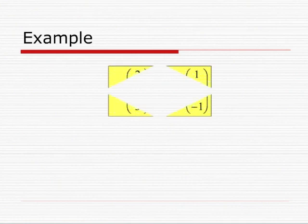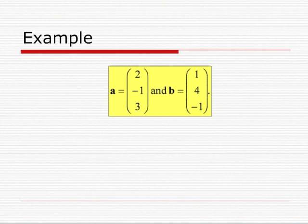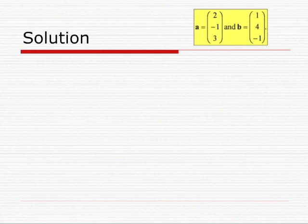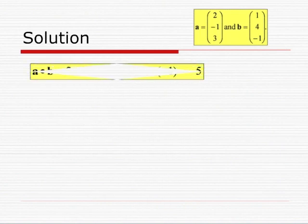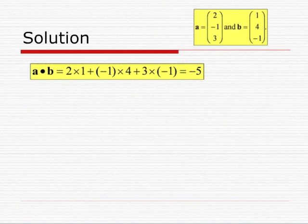For example, let us calculate the angle between the vectors A = (2, -1, 3) and B = (1, 4, -1). To solve this problem, we first calculate the dot product of A and B, which is 2×1 + (-1)×4 + 3×(-1), which is -5.